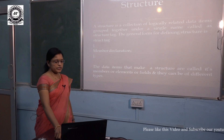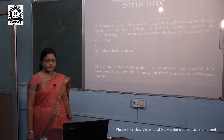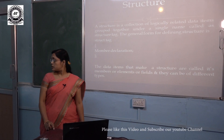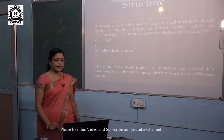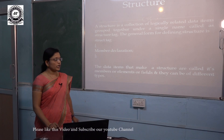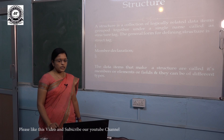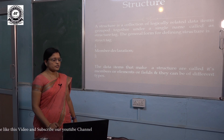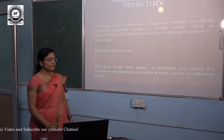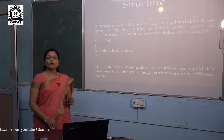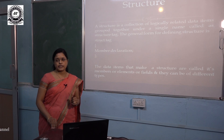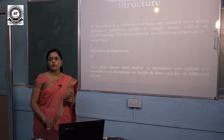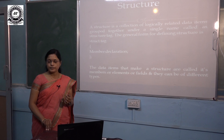First, we will see what is meant by structure. A structure is a collection of logically related data items grouped together under a single name called as structure tag. We know that in C language, there are 4 basic data types: char, int, float, and double.